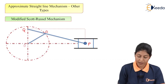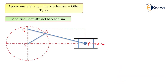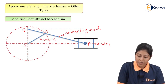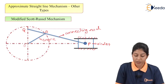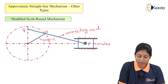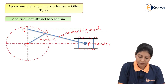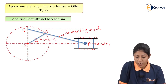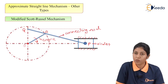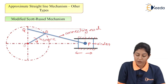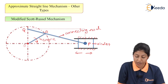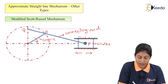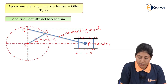This is the Scott-Russell mechanism where we consider one slider, one connecting rod, and one crank. This slider slides with respect to the fixed link. Here OA will rotate about point O with some angular velocity, oscillating link AP, and the slider will move in forward and backward direction. With this reciprocating motion of P, we consider point Q which is the extension of AP.